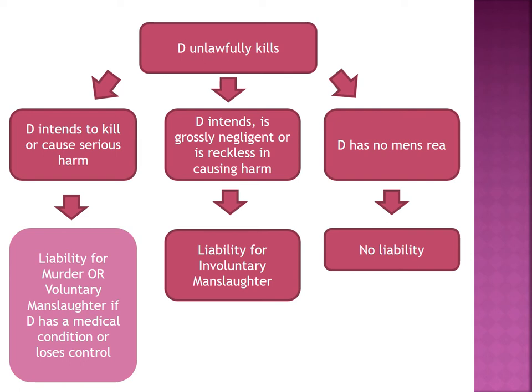If a defendant has failed in a duty they legally owe to a victim — such as doctor/patient, employer/employee, or parent/child — they may be liable if that victim dies through neglect. Obviously if that neglect is willful and intentional, that's when we can move to more serious liability. What we are concerned about in this tutorial is where there is a killing, a defendant has intended to kill or cause serious harm, but there is a reason why they did that — perhaps a medical condition, or perhaps they lost control in the moment.